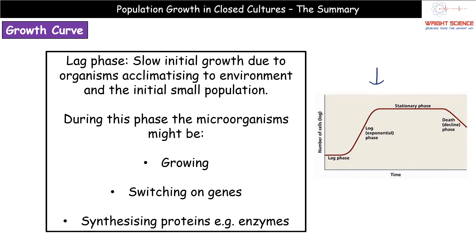We can see the predictable pattern on the graph and we'll go through each phase one at a time. The first phase, on the left-hand side, is the lag phase, starting at time zero. Initially we find very slow initial growth. This is because we've just introduced these microorganisms to the environment and it takes them time to acclimatize. During that initial acclimatizing phase, they're potentially switching on different genes, synthesizing proteins they need to carry out different processes. All of that means they don't show a rapid increase in population - growth is very slow. That is the lag phase.